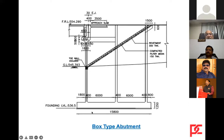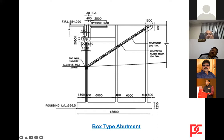Alternatively, you can go for box-type abutments, where you have an end wall and box compartments. These compartments are filled with backfilling soil, and the structure also acts as a return wall. This type is also used where the abutment height is about 20 to 25 meters.